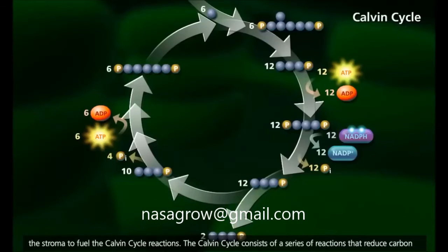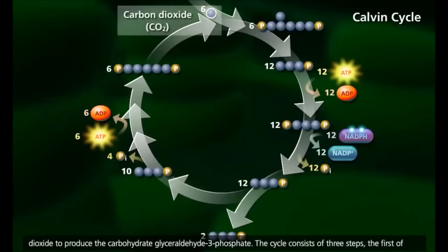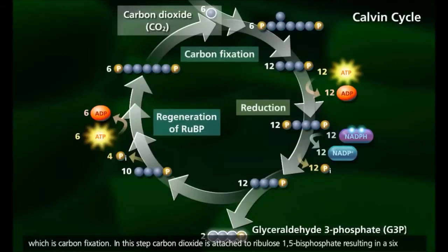The Calvin cycle consists of a series of reactions that reduce carbon dioxide to produce the carbohydrate glyceraldehyde-3-phosphate. The cycle consists of three steps, the first of which is carbon fixation.